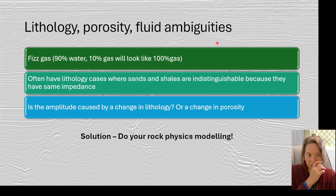Other things to consider, and I showed you examples of these in a previous lecture, is the idea of fizz gas, under saturated gas, uneconomic gas reserves. To keep in mind that if you have 10% gas in a brine, it will look the same in terms of amplitudes as 100% gas. So those are some ambiguities that you have to work with. You can often have cases where sands and shales are indistinguishable from each other because they have similar acoustic impedances. That goes back to that depth trend that I said you always want to make sure that you know where you're working.